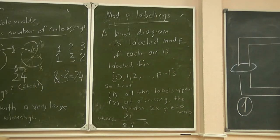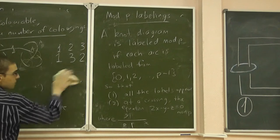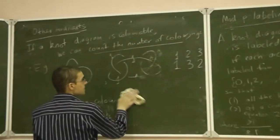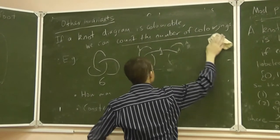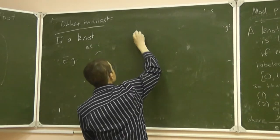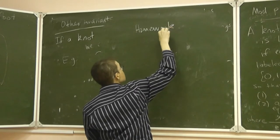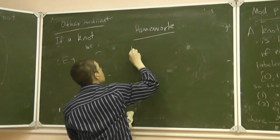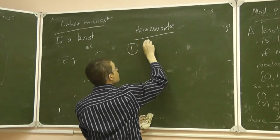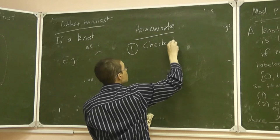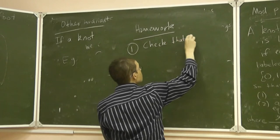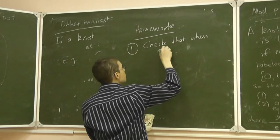So first, the first thing to check is that when p equals 3, this is the same as what we were looking at before. So the last thing to check is that when p equals 3, this is the same as the earlier definition.